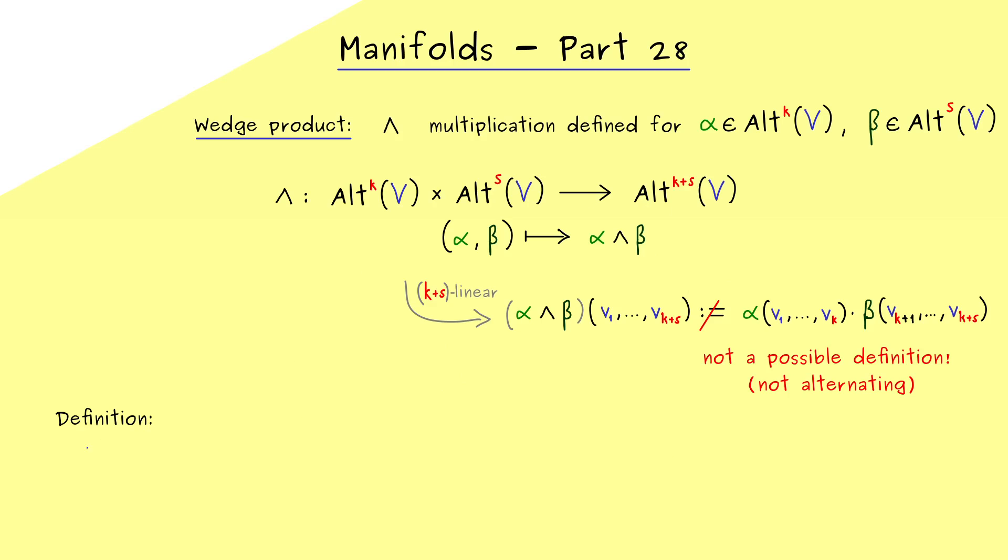So we have to do something to make the outcome here alternating again. And now if you remember some linear algebra and the definition of the determinant, you might already know how to do it in this case. In fact, you have to deal with permutations of the vectors we put in.